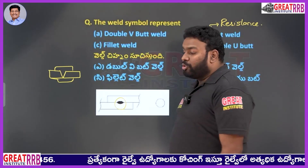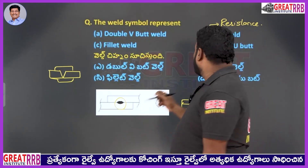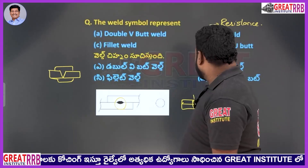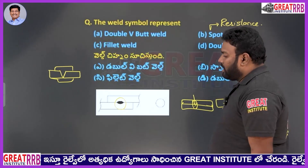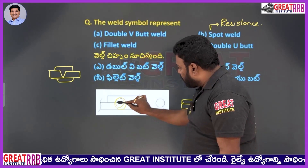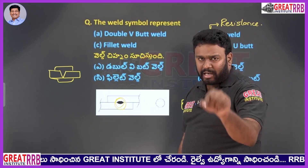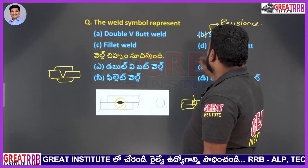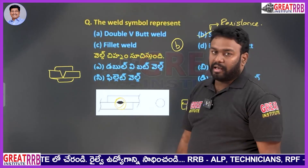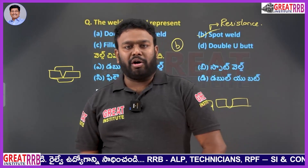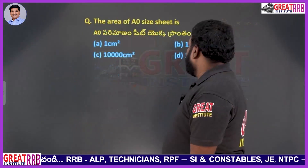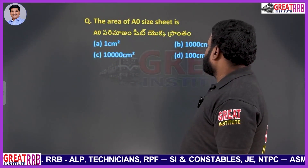Double U weld is a U-type weld. The question asks about a weld symbol represented by only a particular spot — that is spot welding or resistance welding. Option B, spot or resistance welding, will be the right answer for the given question.